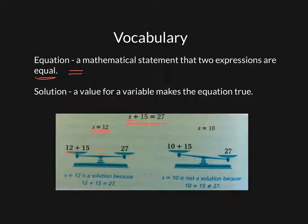So S equals 12 is a solution because 12 plus 15 equals 27. Whereas here, if I'm saying is S equals 10 a solution for this equation, I'd see 10 plus 15 is only 25. So this is not a solution because 10 plus 15 does not equal 27.